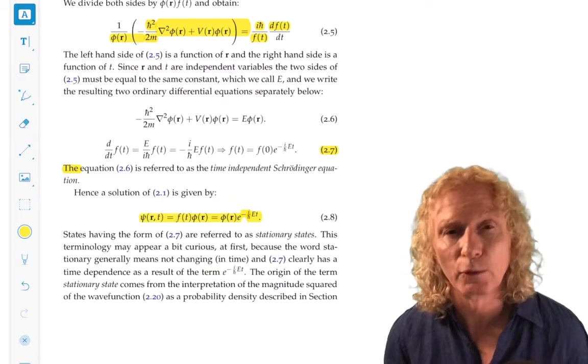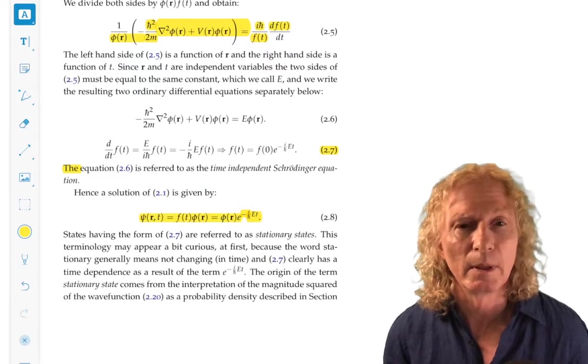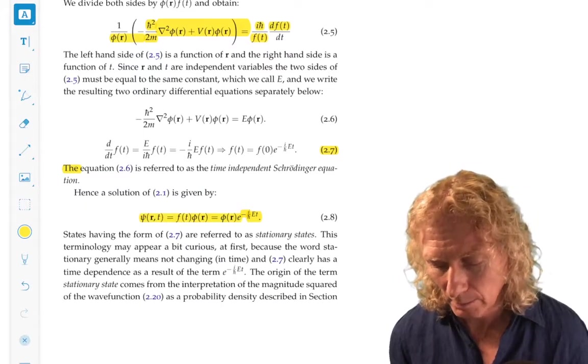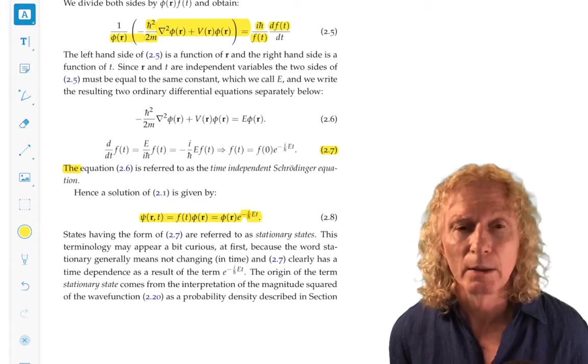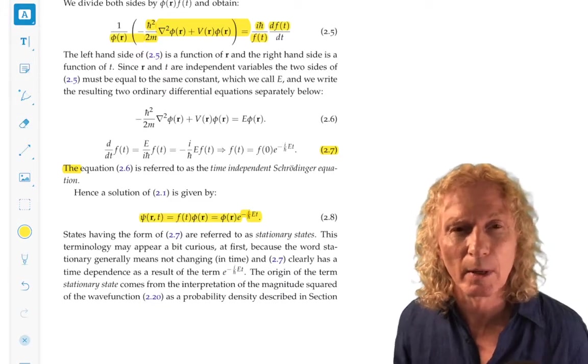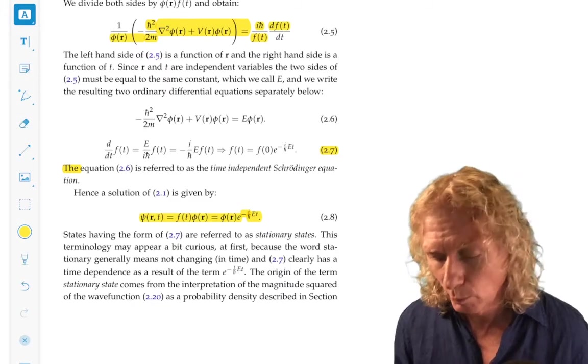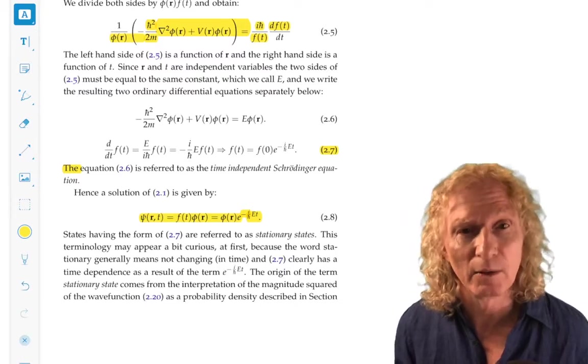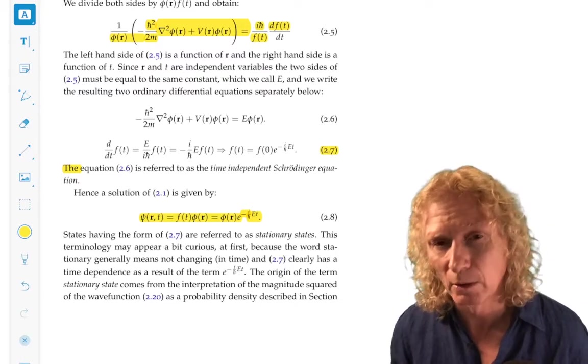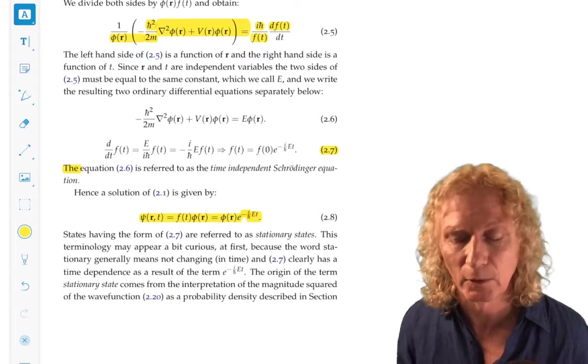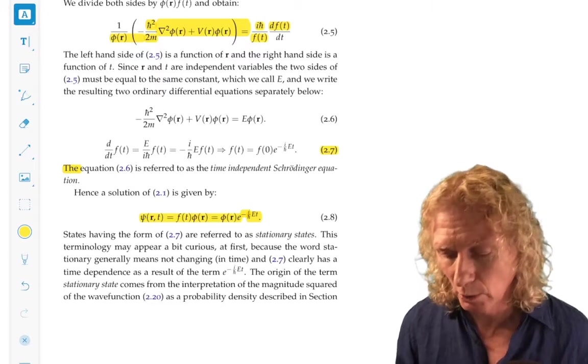Now, when the wave function is expressed in its form as a spatially-dependent term, φ(r), times the time-dependent term, e to the minus iE over ℏ t, we refer to that as a stationary state. Even though it does depend on time, we'll see why we refer to it as a stationary state shortly.